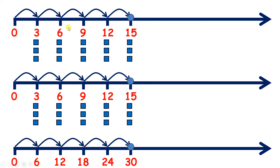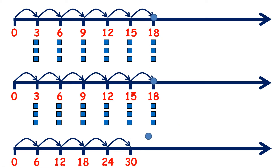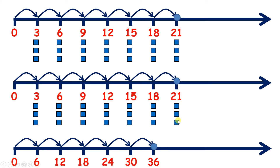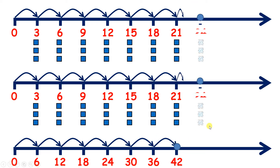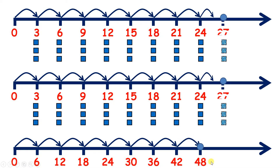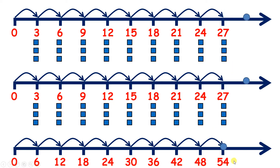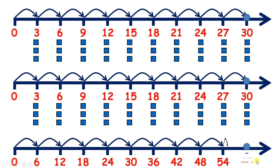So if you have the three times table twice, you have the six times table, because three plus three is six. Carrying on, we have 36; another three on each line and we have 42, 48, 54, and 60.